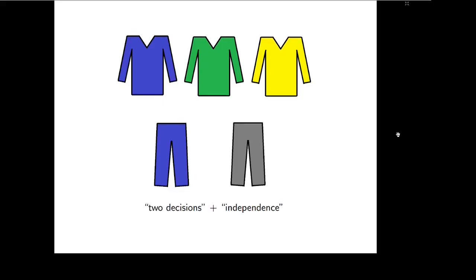It is important: if we have two decisions or two events that are independent, then we use multiplication. Note that we need to have two decisions and independence. You can't use multiplication when you are only talking about one decision without breaking it into more than one smaller decision. And also, if the results of smaller decisions are affecting each other, then again it is not a place where you can use multiplication.